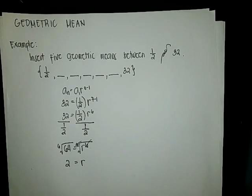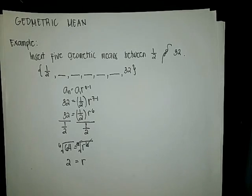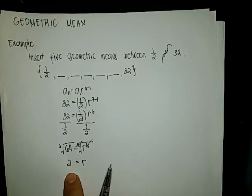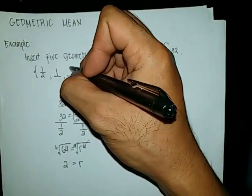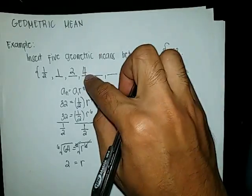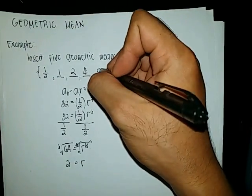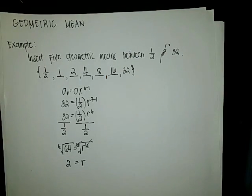We now have the value of our common ratio, r = 2. What we need to do now is multiply the common ratio on the terms inside the geometric sequence. So: 1/2 multiplied by 2 equals 1; 1 times 2 equals 2; 2 times 2 equals 4; 4 times 2 equals 8; 8 times 2 equals 16. So those are what we call the geometric means.